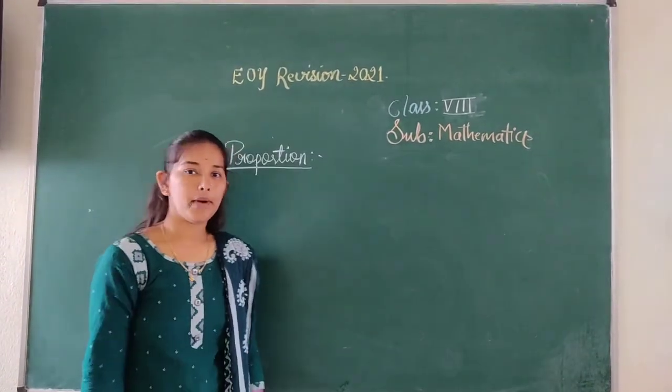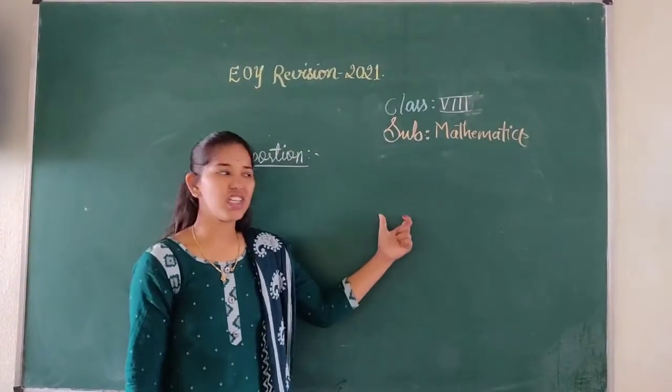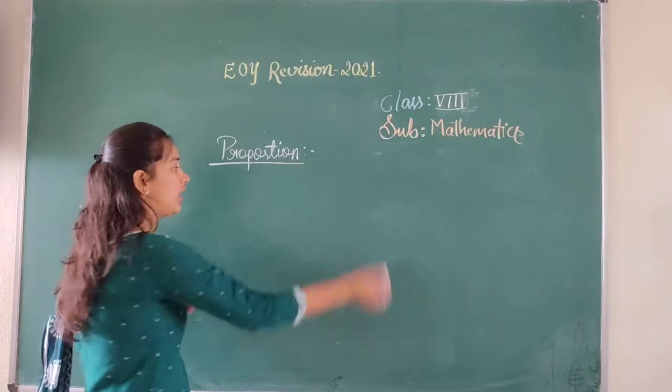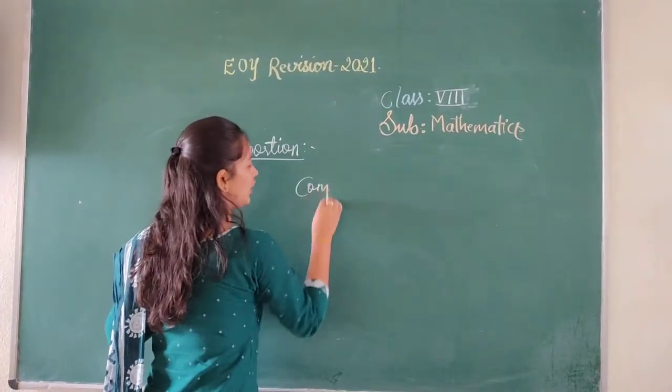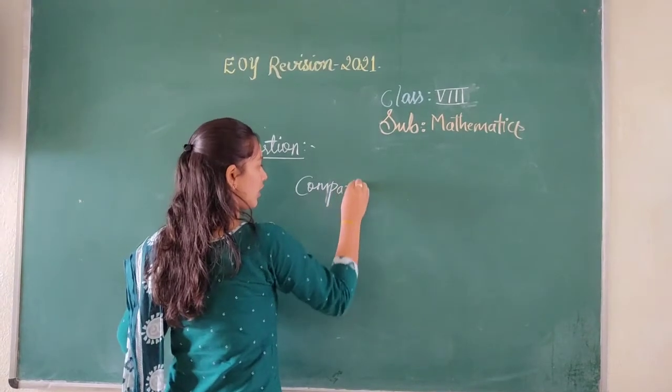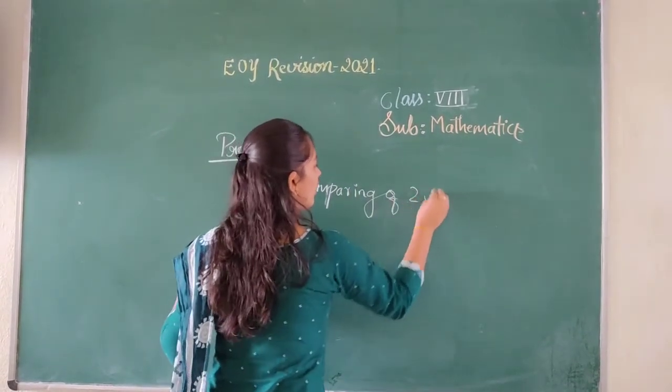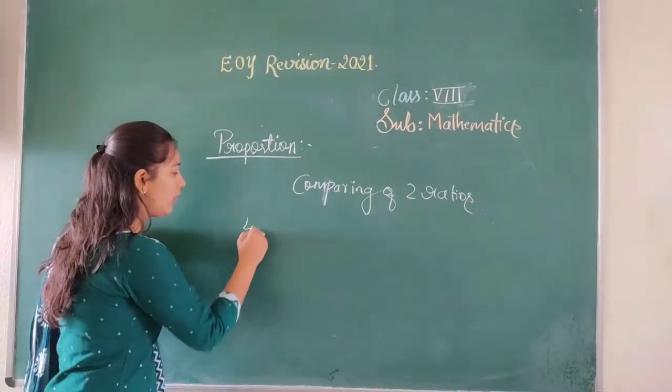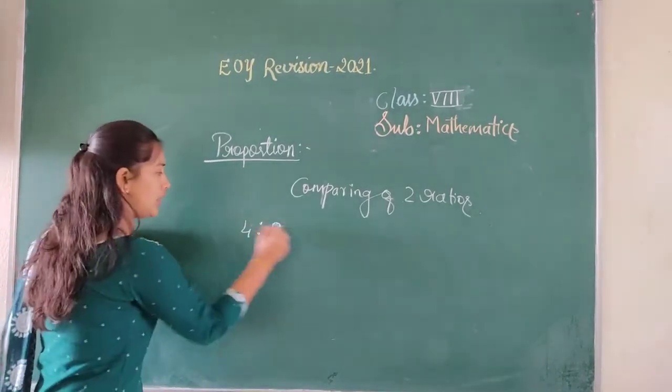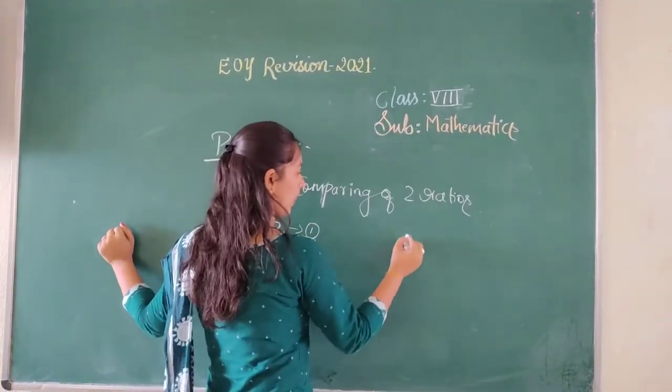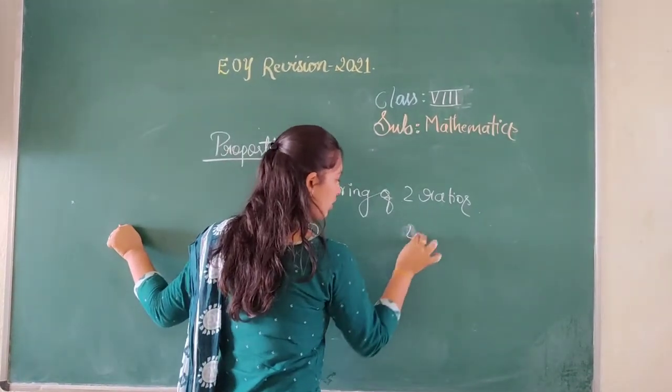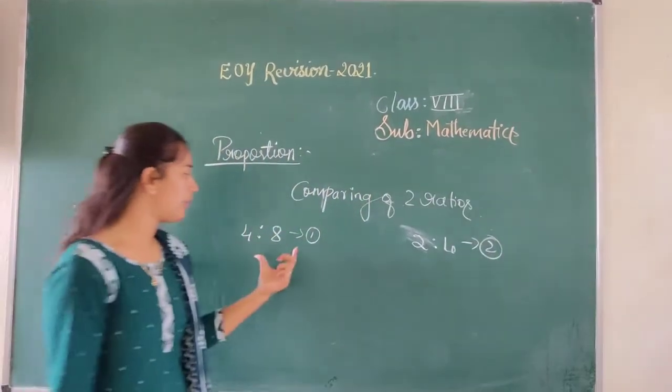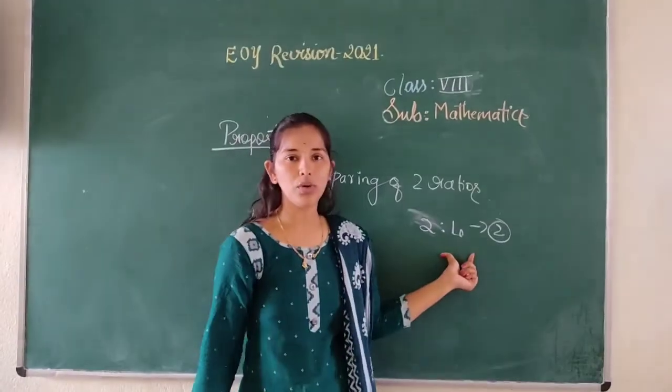Now, proportion. What do you mean by proportion? You just know about ratio. Proportion means comparing of 2 ratios. How we are going to compare? For example, 4 is to 8, this is 1 ratio. And another ratio will be 2 is to 4. This is another ratio. And we are going to compare 4 is to 8 and 2 is to 4.